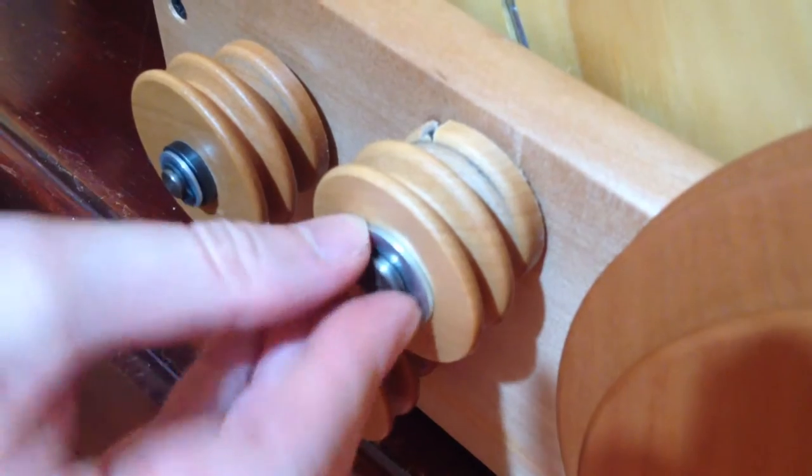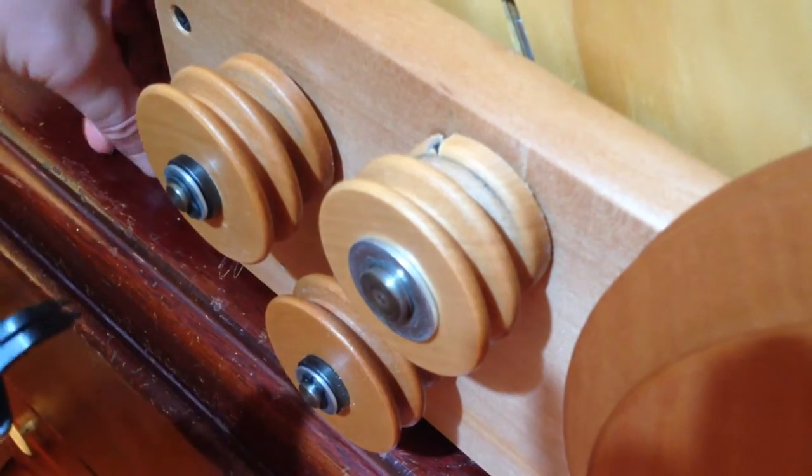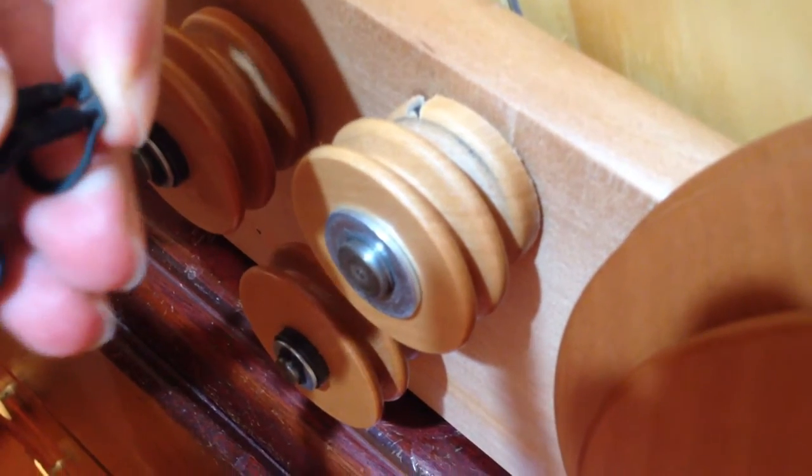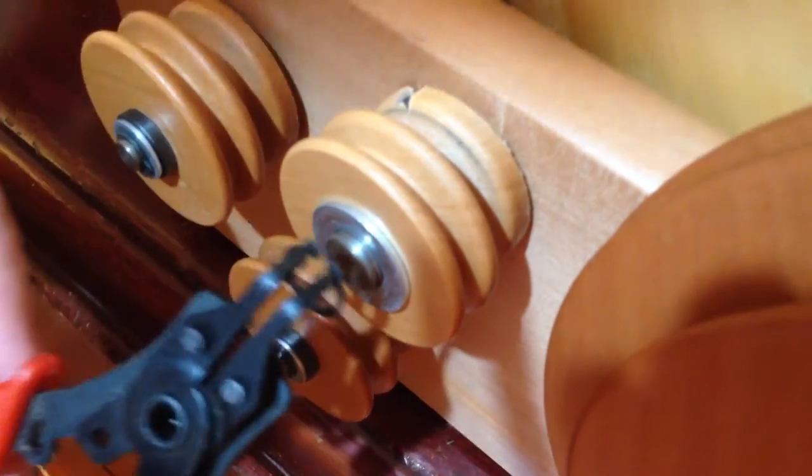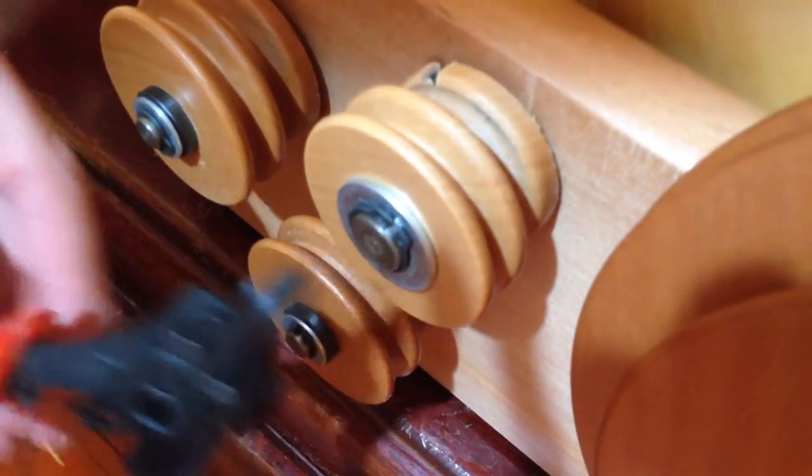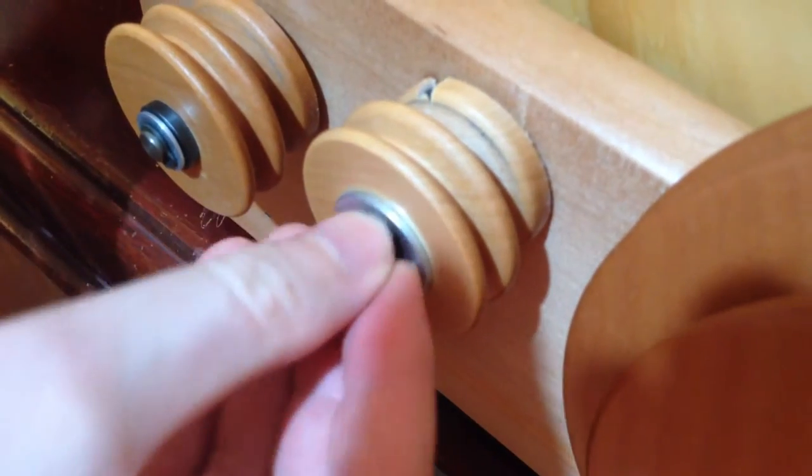Then put the washer on, put the circlip back on the pliers. Squeeze it, not too much. You don't want to expand it too far. Get it back and then just push it back into place.